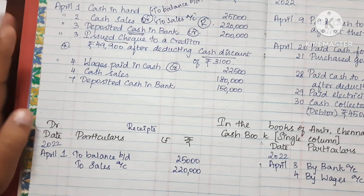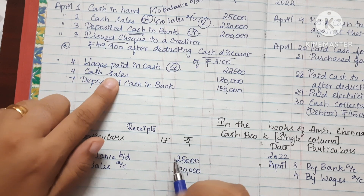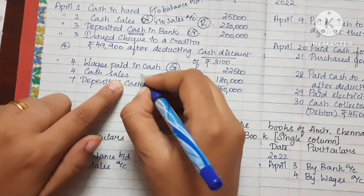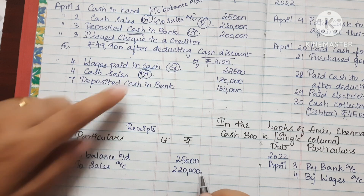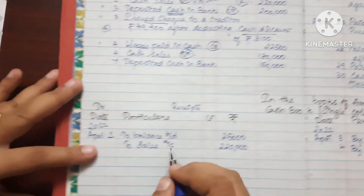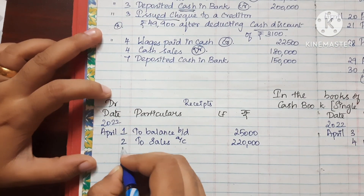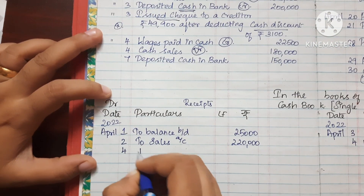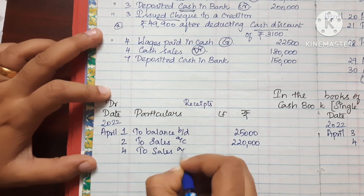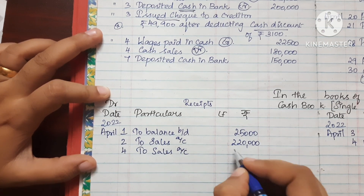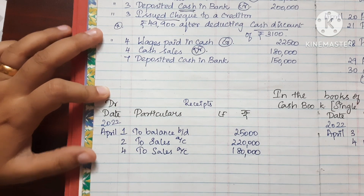The next transaction is cash sales. When we make cash sales, cash is received, so we debit the cash account. The entry is: To Sales Account. The amount is Rs. 1,80,000.